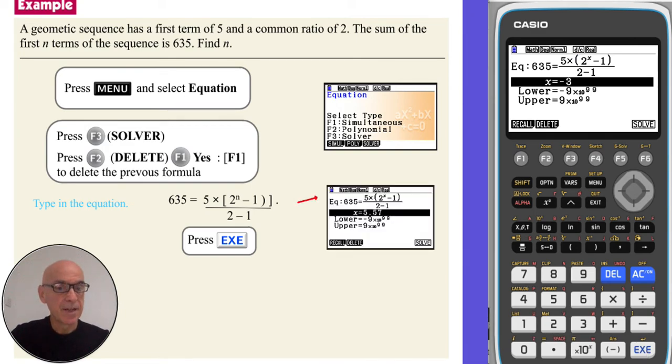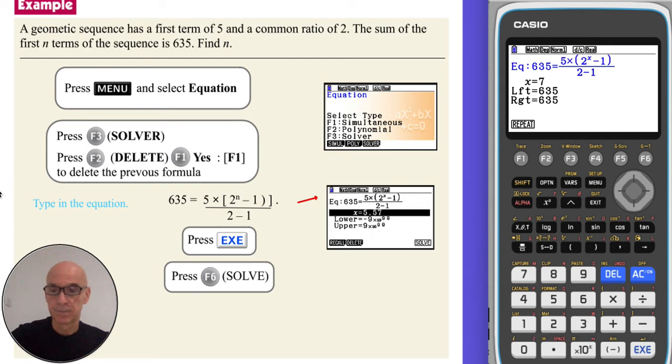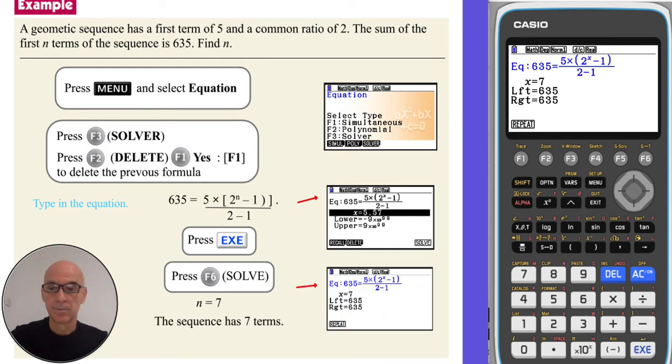Just to note that the number next to x is not the solution to our equation, as we haven't pressed solve yet. So if we press F6 to solve the equation, we will see that x or n in our case is equal to 7.